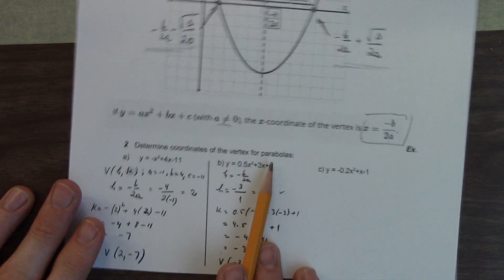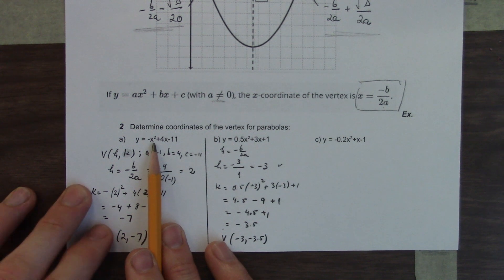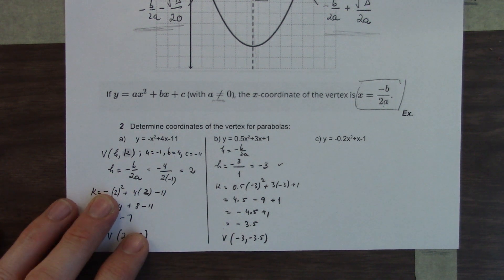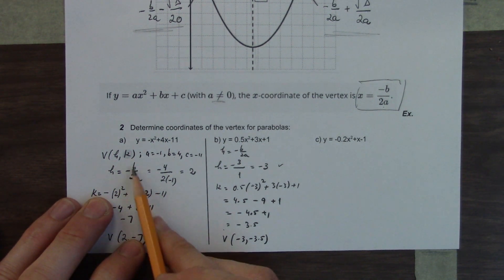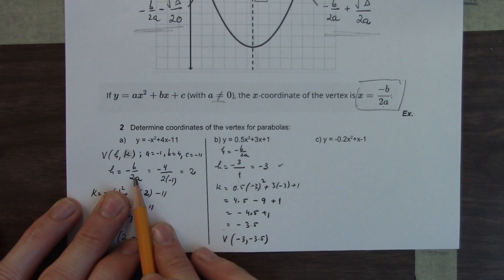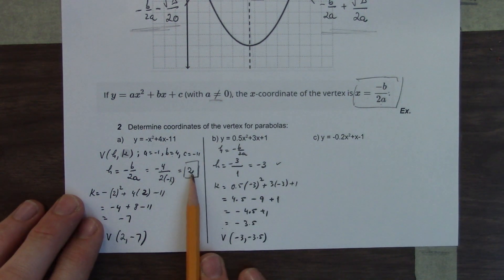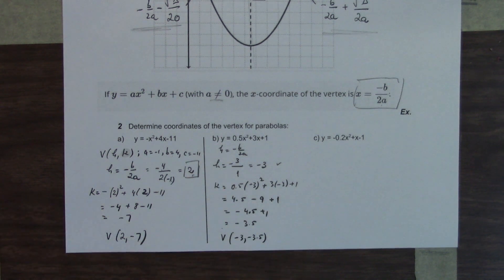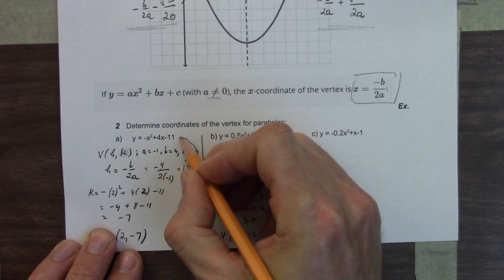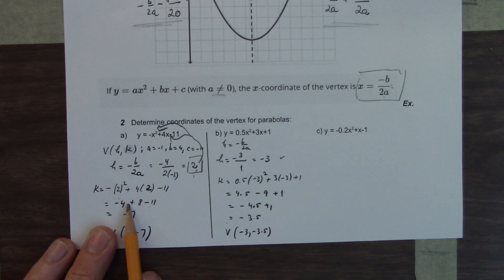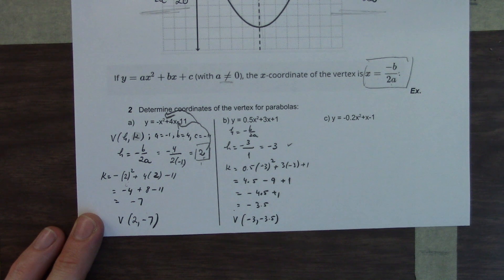Determine the coordinates of the vertex for the parabola. So if we have standard form here, we know a, we know b. Right away we can determine the x-coordinate of the vertex. We just plug it into this nifty new formula we have, minus b over 2a. We get minus 4 over 2 times minus 1. We get 2. That's the x value of the vertex. To get the y value, you plug it back into the original formula. You take that 2 and you plug it back in for x. We get negative 7.